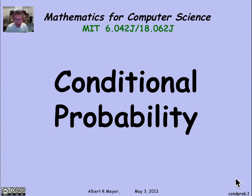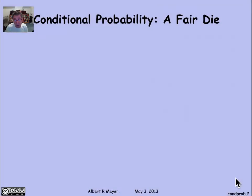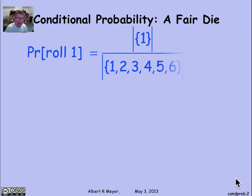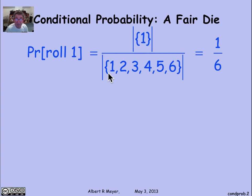Let's look concretely at a very simple example of conditional probability. We look at rolling a fair die. With an ordinary fair die, there are six equally likely outcomes: 1, 2, 3, 4, 5, 6. If I ask what's the probability that in one roll I roll a 1, it's the number of outcomes involving rolling a 1 divided by the total number of outcomes — it's 1/6. The probability of any given face of a six-sided fair die is 1/6.